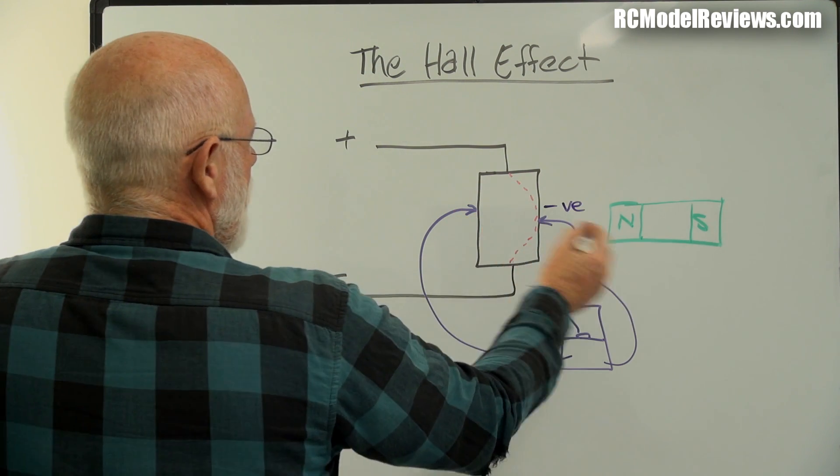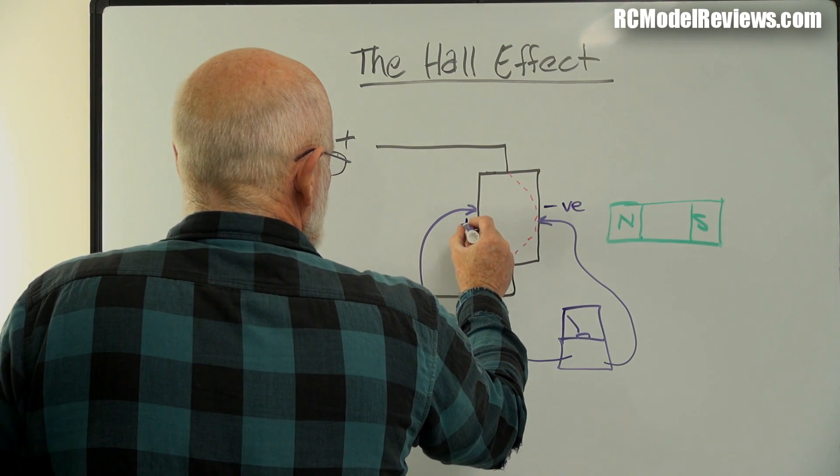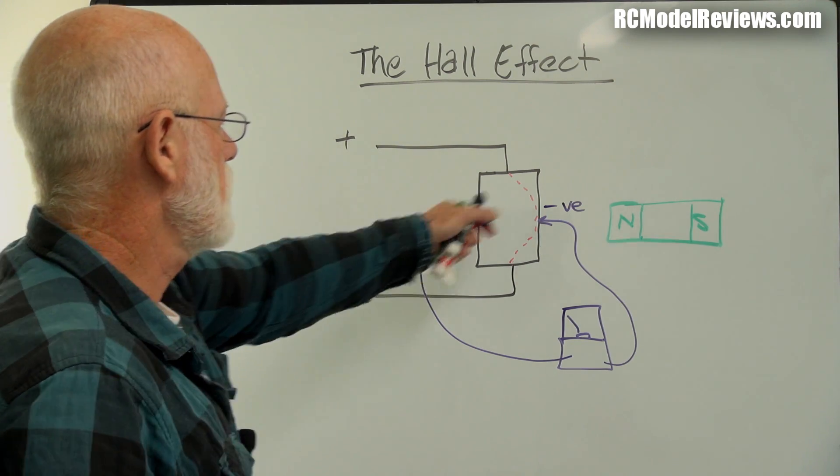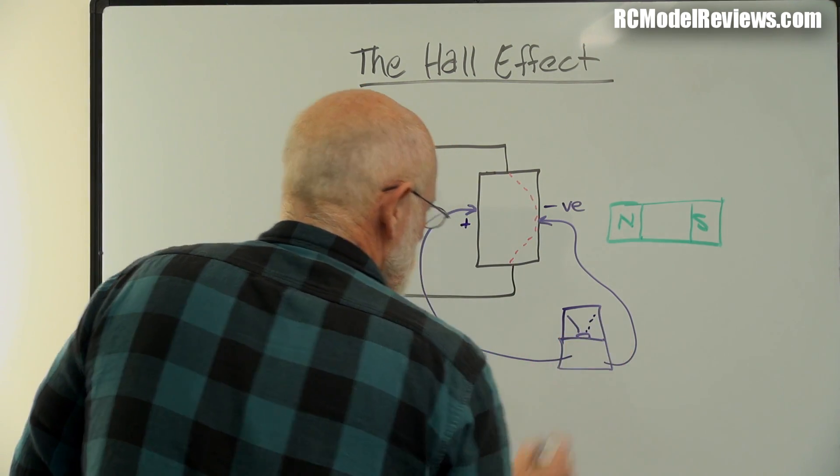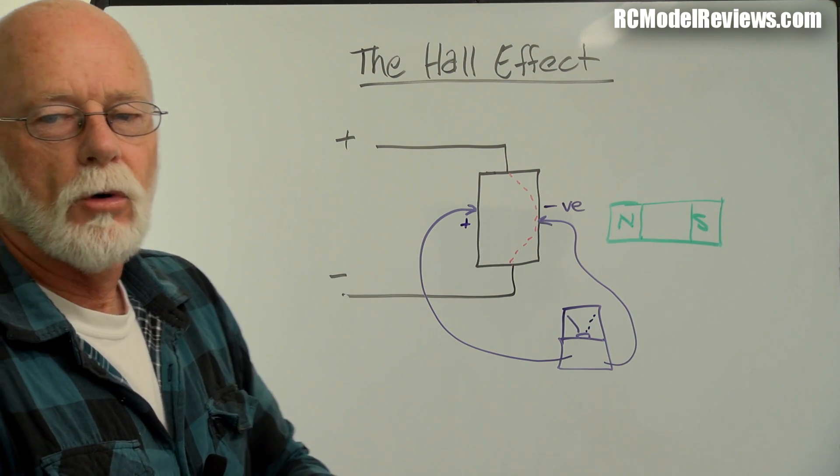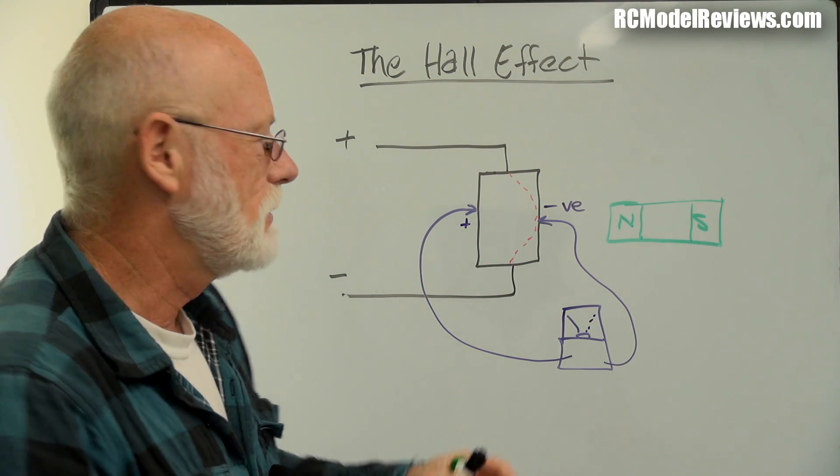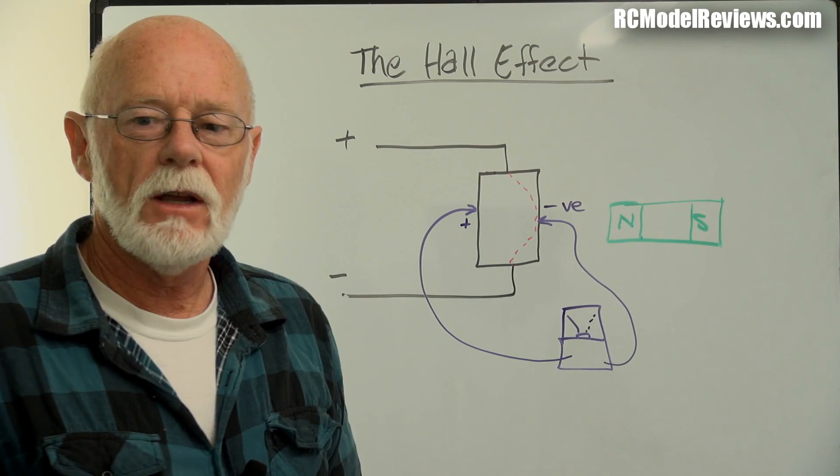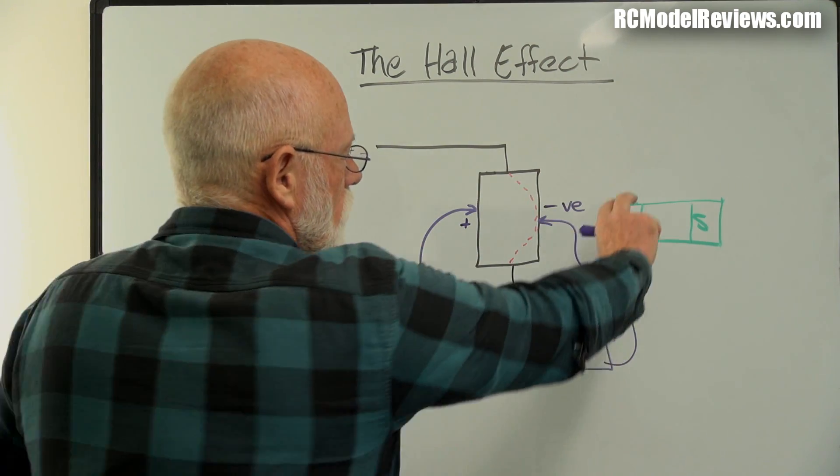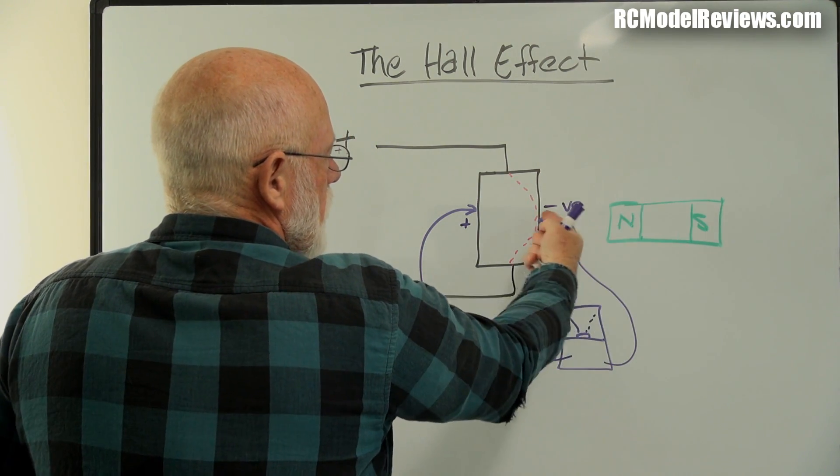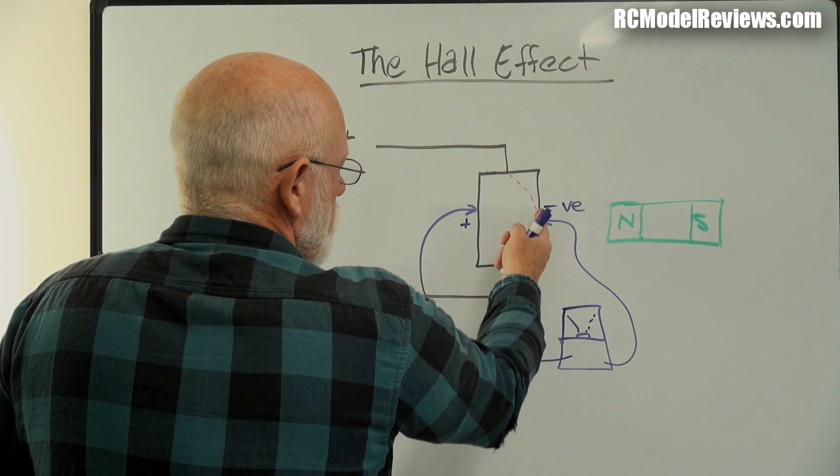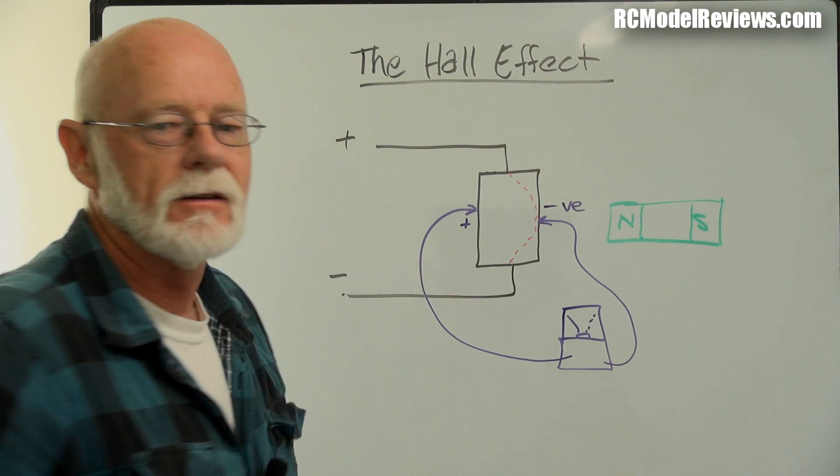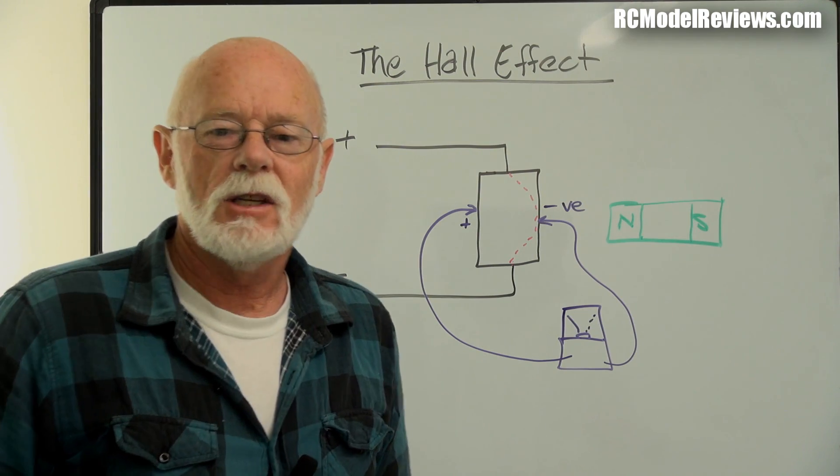The interesting thing is we will actually get a voltage appearing, because this has got a lot of electrons. This is going to become negative, and relative to this side, that will be negative. So there will be a voltage appearing. This becomes positive relative to that side. So we have positive and negative. Our little meter will show a voltage. The amount of voltage that it shows will be dependent on the strength of the magnetic field and also the orientation.